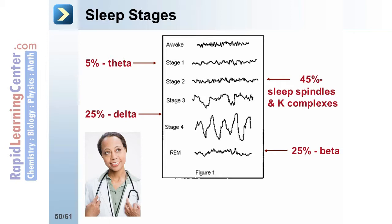Bedwetting, sleepwalking, and night terrors occur during stage 4 sleep. And finally, there is REM. Dreaming occurs during REM with loss of motor tone for 25% of the time with a beta EEG waveform.